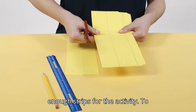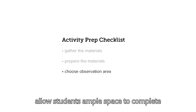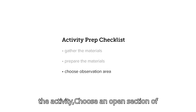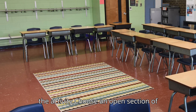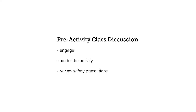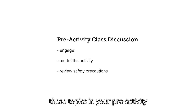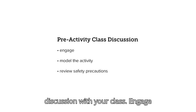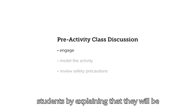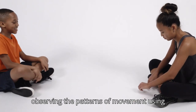As an alternative, you can use a manila folder — one folder will provide enough strips for the activity. To allow students ample space to complete the activity, choose an open section of your classroom, gym, cafeteria, or hallway. To help ensure a smooth activity, include these topics in your pre-activity discussion with your class.